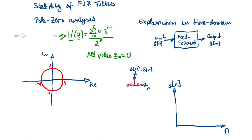So now let's have a look at the stability of FIR filters. We can also do a pole zero analysis. So this is the transfer function of FIR filters. And now we have here a z power minus i, and then for the pole zero analysis we have to make a positive exponent here. And so we can rewrite this transfer function.